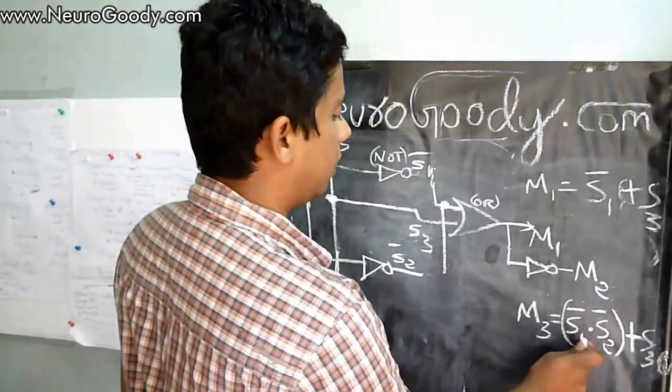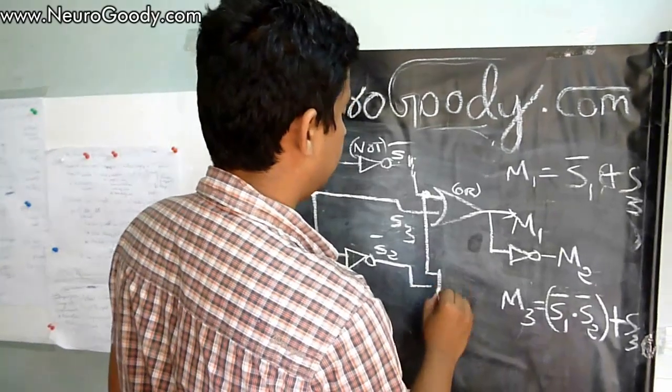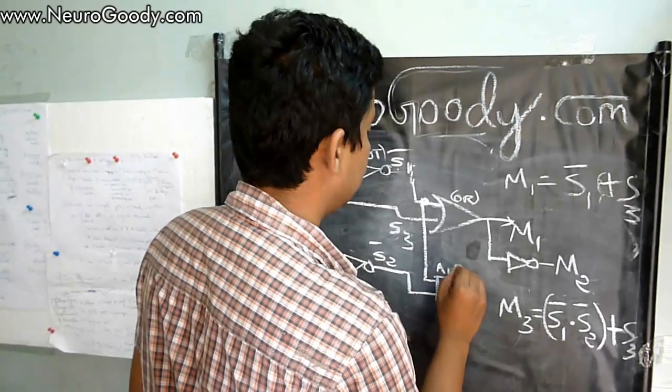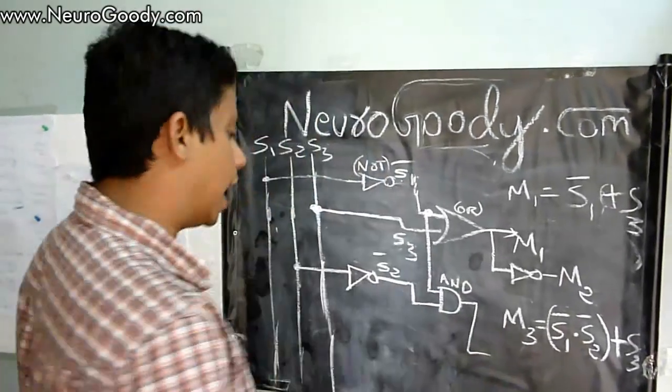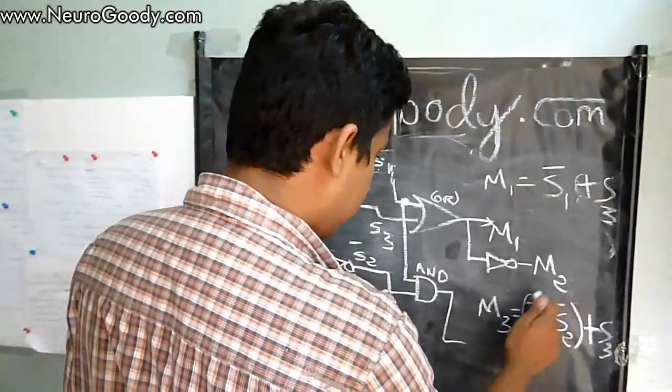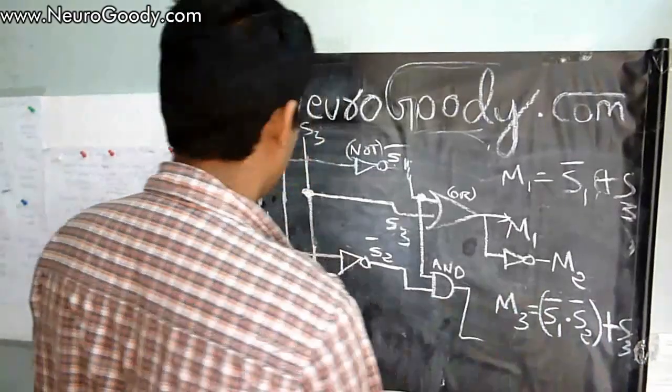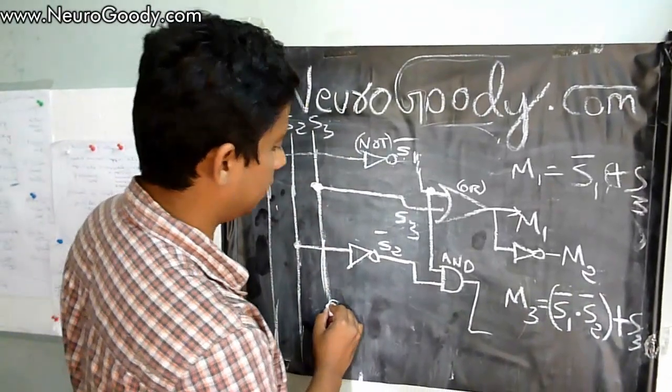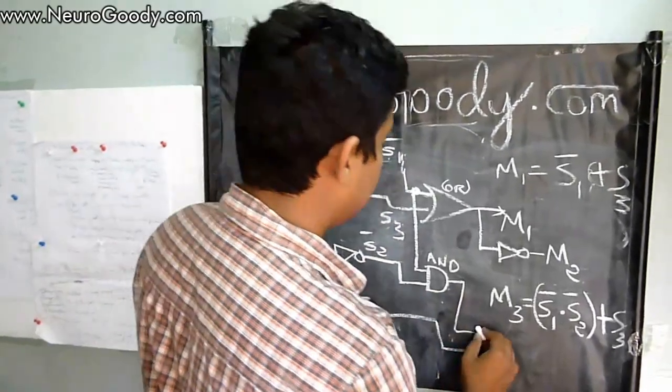Now I have to AND these two, S1 bar and S2 bar, so I give this to a two-input AND gate. Then I have to OR this whole thing to S3. S3 is here, so I'll tap S3 from here and send both of these to the inputs of the OR gate.